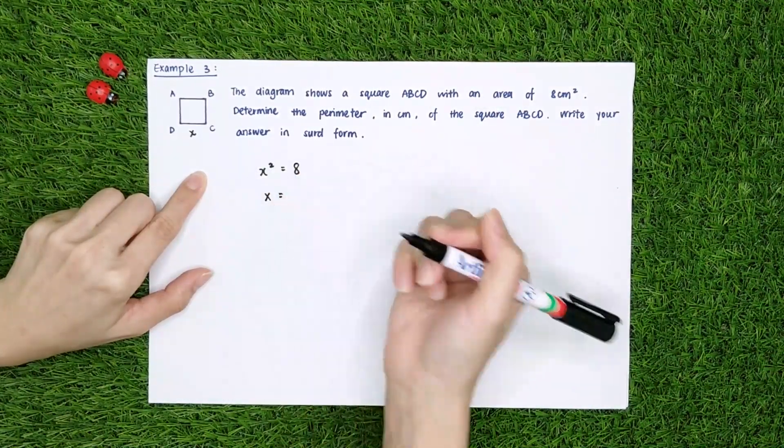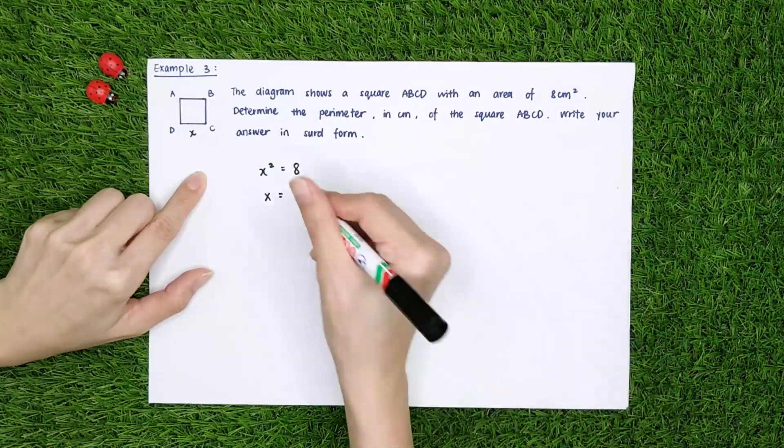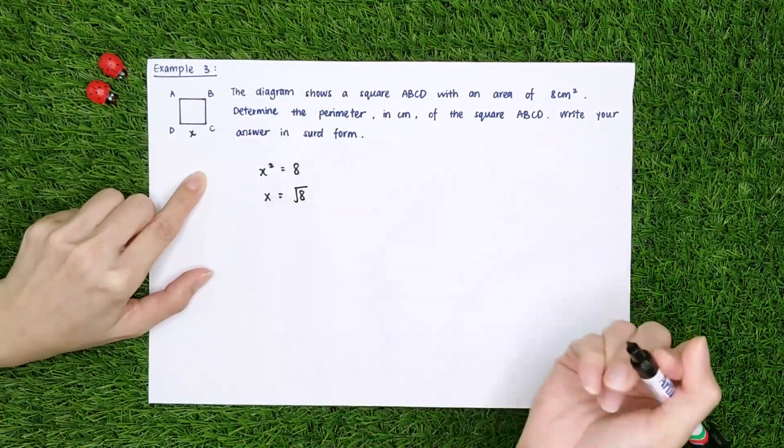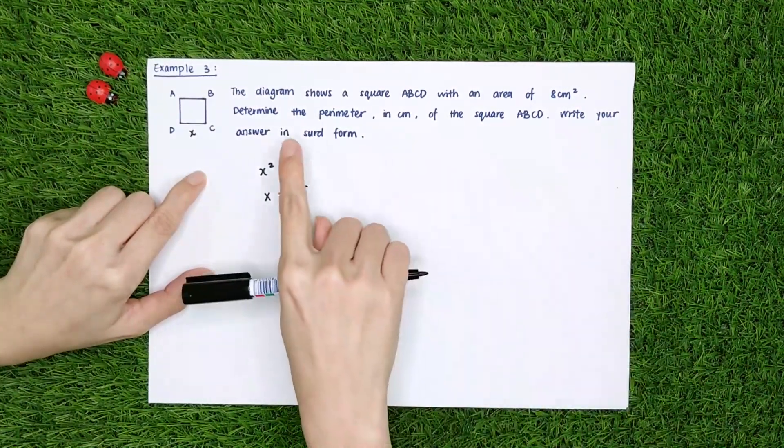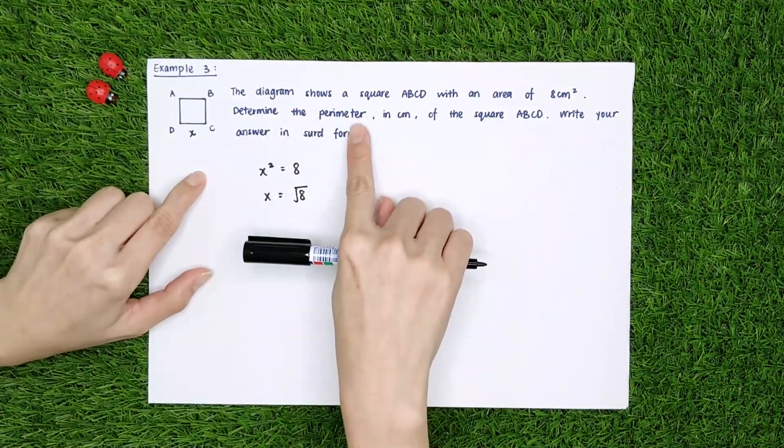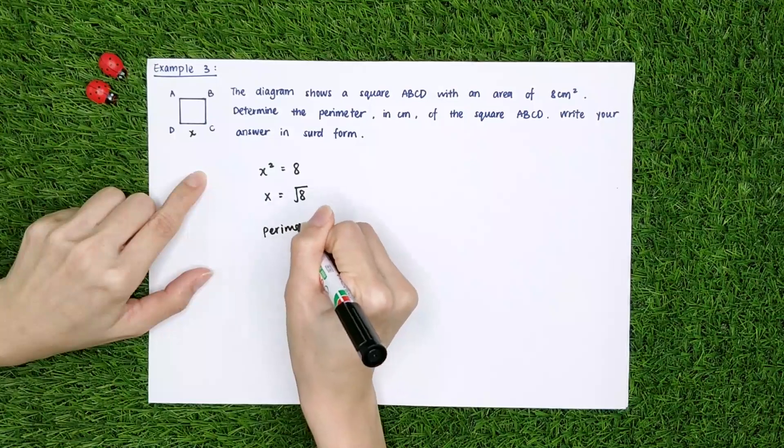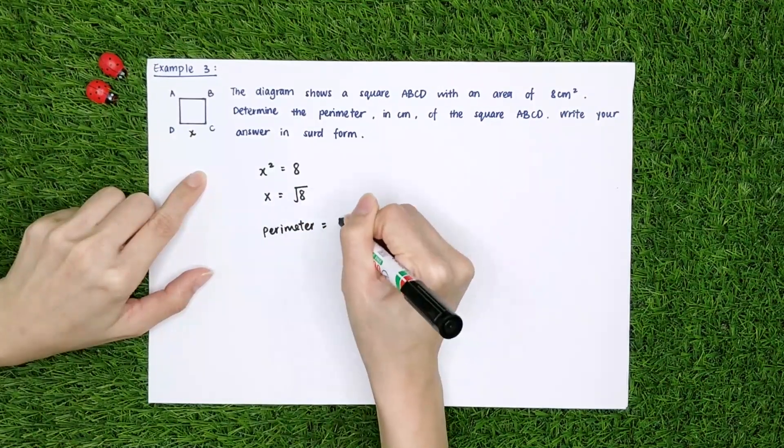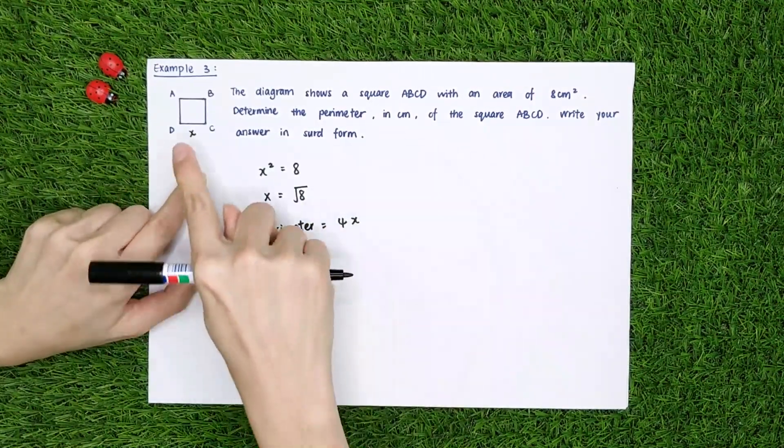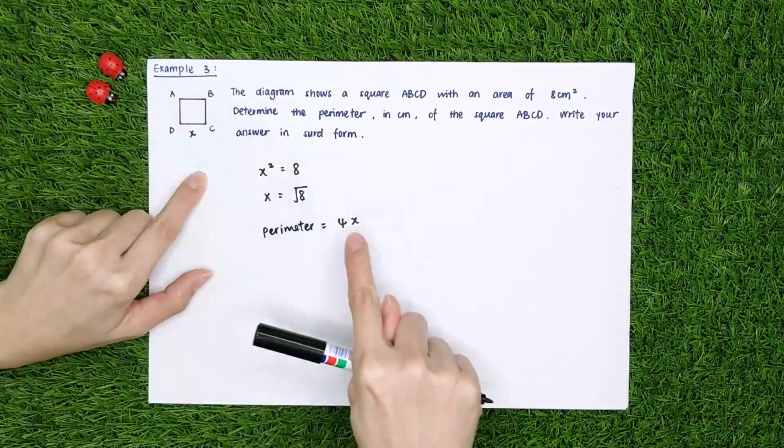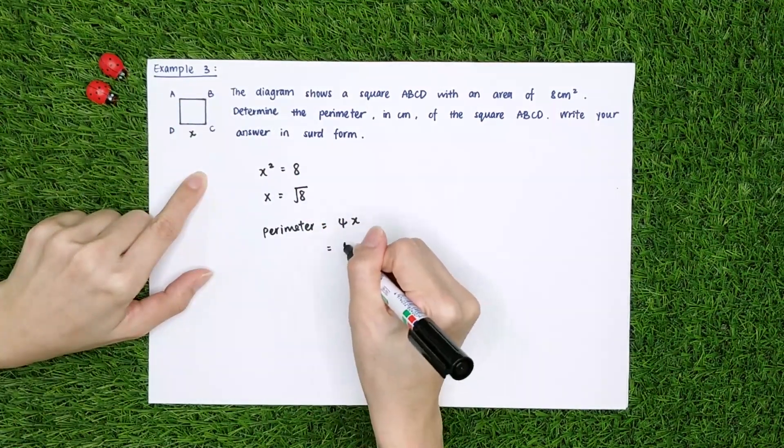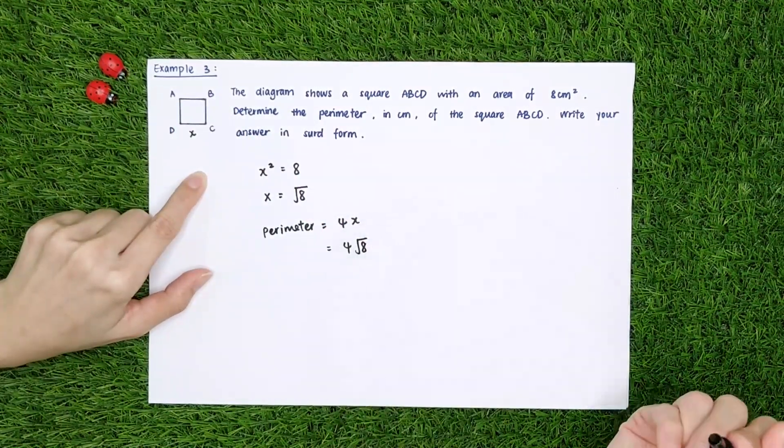So, that means one side of the square ABCD is square root of 8. Okay, so now the question wants us to find the perimeter. Perimeter means 4x, okay? Because there are four sides, isn't it? So, it's 4x. That means 4 square root of 8.